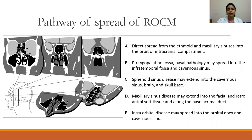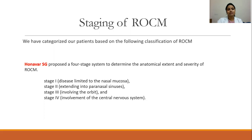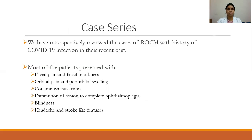Pathway of spread of ROCM can be direct spread or through the pterygopalatine fossa, or through the sphenoid sinus from the maxillary sinus into adjacent soft tissue, or from the ethmoid sinus into the orbit, orbital apex, and into the cavernous sinus. We categorized patients based on the Honavid SG four-stage system: Stage 1, disease limited to nasal mucosa; Stage 2, extended into paranasal sinuses; Stage 3, involving the orbit; and Stage 4, involvement of the central nervous system.